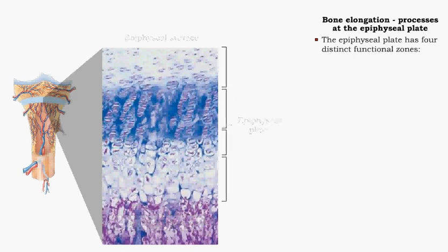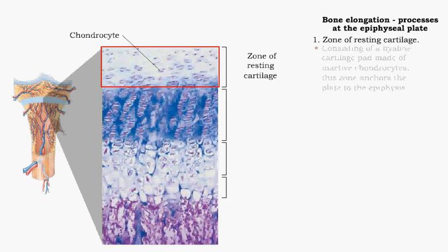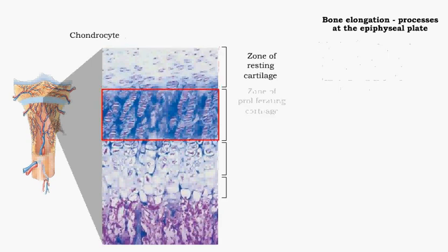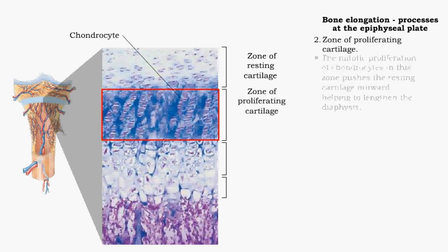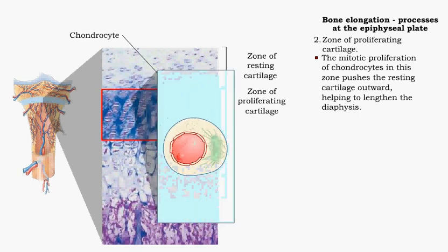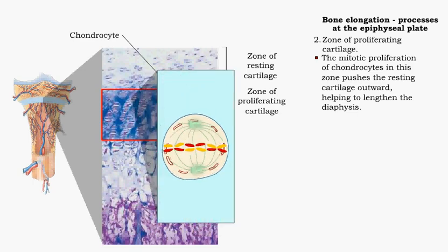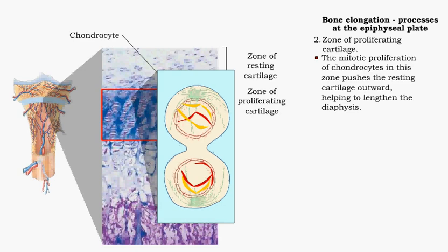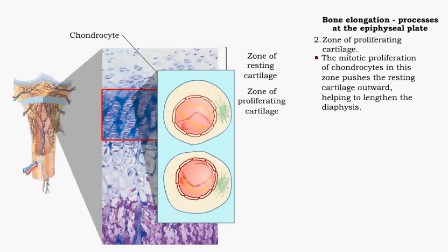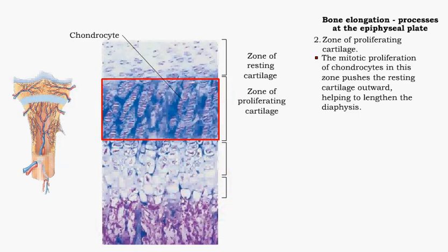The epiphyseal plate consists of four distinct zones. The zone of resting cartilage consists of hyaline cartilage and is anchored to the epiphyseal. The zone of proliferating cartilage organizes a supply of highly mitotic chondrocytes. As these cells divide and increase in number, the resting cartilage is pushed outward, helping to lengthen the diaphysis.